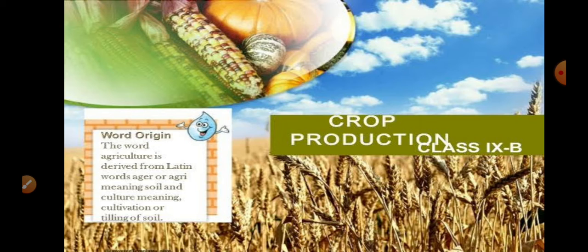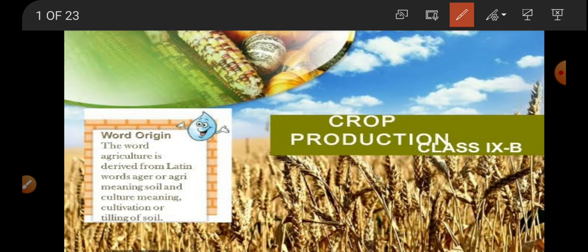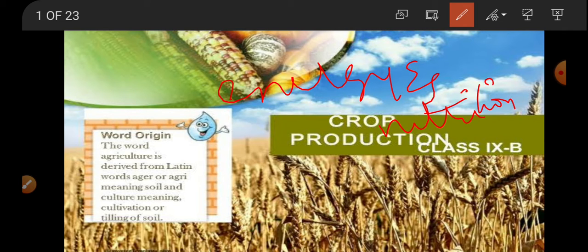Namaste children, welcome back to another session of our science class. Today we are going to start a new chapter — crop production and management. We all know that all living organisms get food from plants and animals for energy and nutrition. Today we are going to learn about agriculture, how it started, the types of crops based on seasons, and a few methods of crop production.